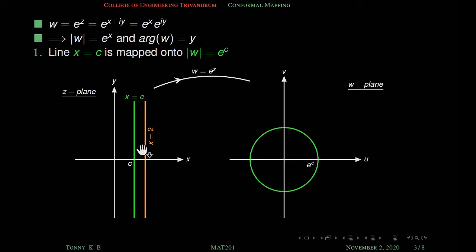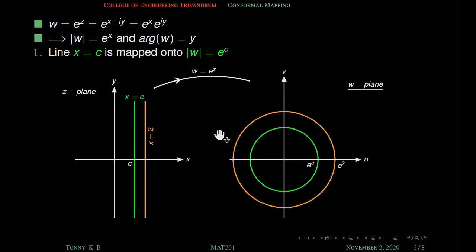For example, the straight line x equal to 2 is mapped onto the circle modulus w equal to e raised to 2, which is the circle with radius e raised to 2.